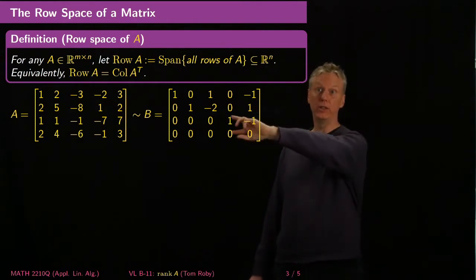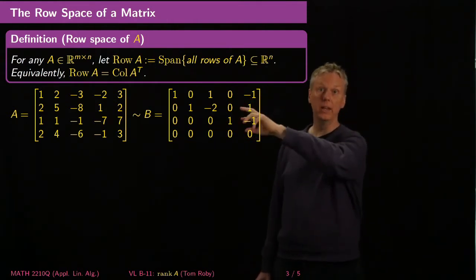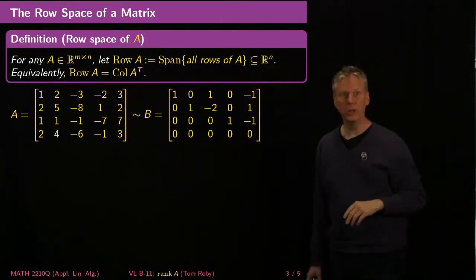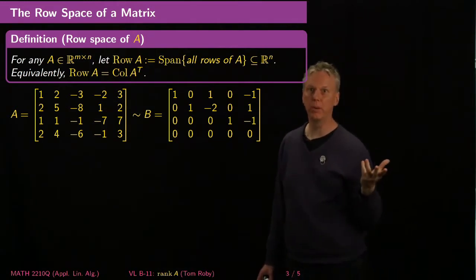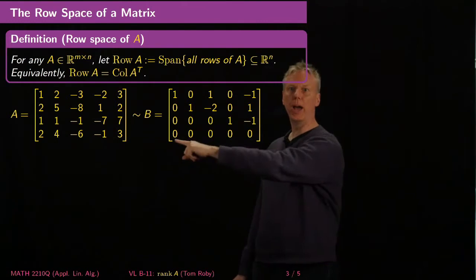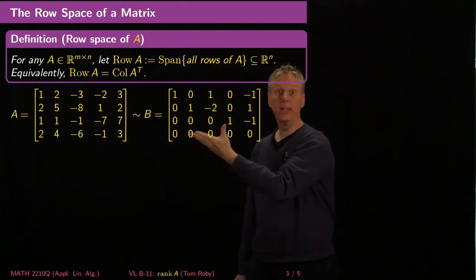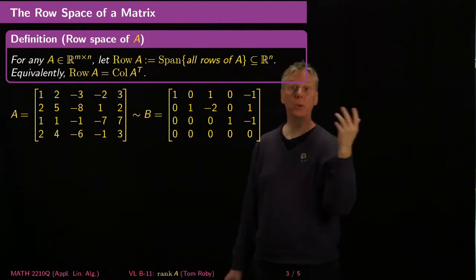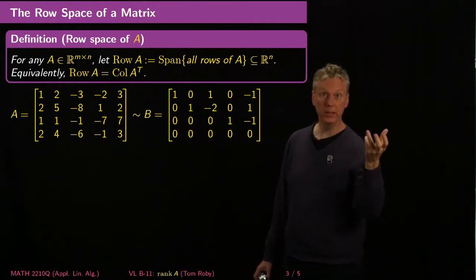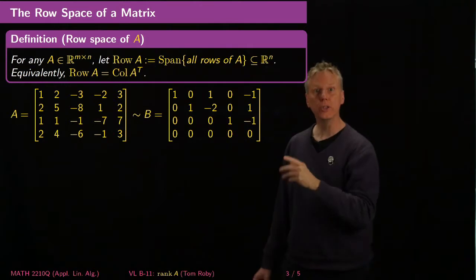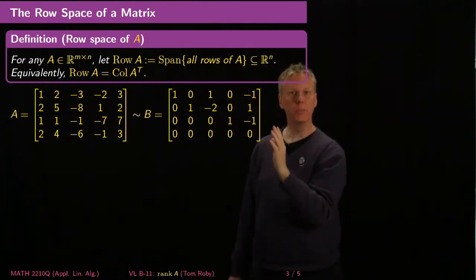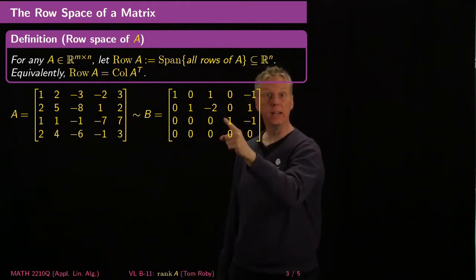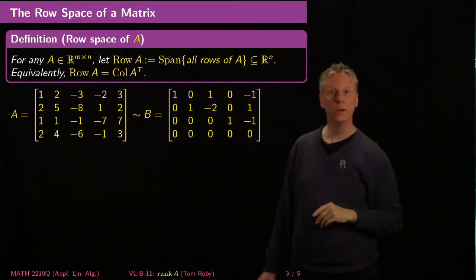Think about it: if you interchange two rows, you're not doing anything to the span. If you rescale a vector, you can just re-rescale by the inverse of the thing you scaled by. And the crucial one is that if you add a multiple of one row to another, you're just getting a new vector that's a linear combination of the vectors you already had. So you do this multiple times and get more complicated linear combinations, but you haven't made your span any bigger. So the span of B is a subset of the span of A.